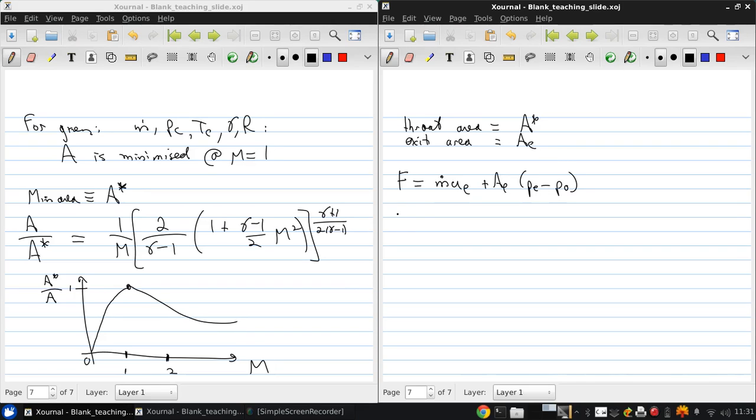And M dot is P star over R T star, U star, A star, where star means that everything is evaluated at Mach 1, so at the throat.